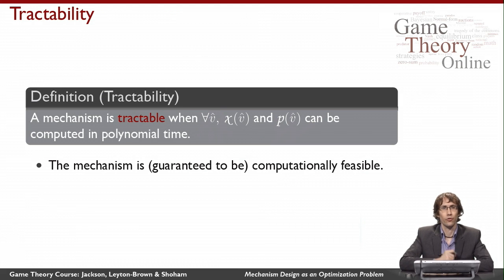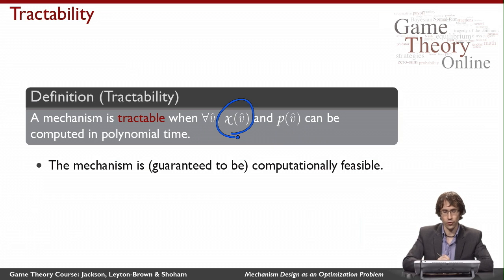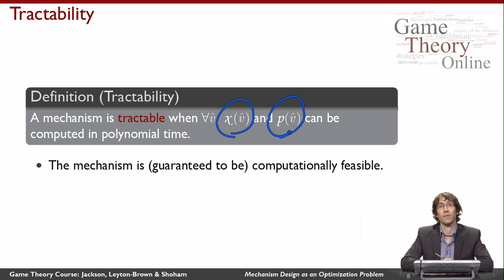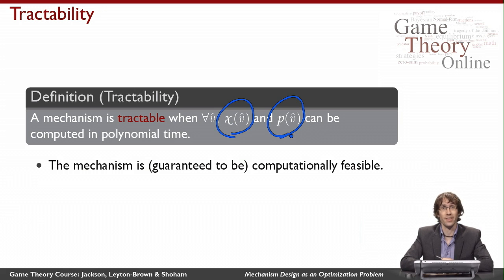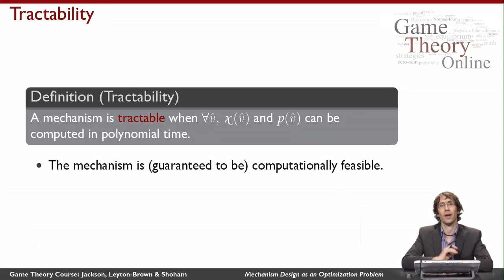Here's one last condition: tractability. So far we've talked about economic conditions on the choice made and the payments imposed. Here I want to say that the choice function x and the payment function p are each computable in polynomial time. Some mechanisms we'll be interested in don't have this property — the computational problem of figuring out what choice to make and how much to charge everybody can be hard. For large inputs, we might not have enough time on any reasonable device to find the answer, so we want a guarantee that we can actually evaluate these functions tractably. A common definition of tractability in computer science is that something can be done in polynomial time.